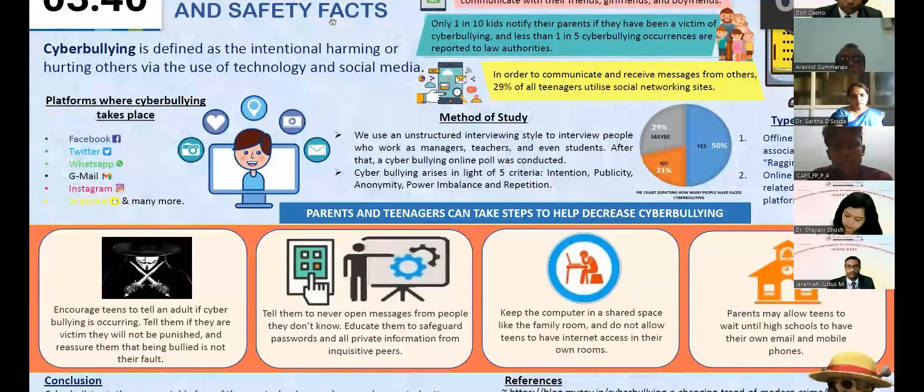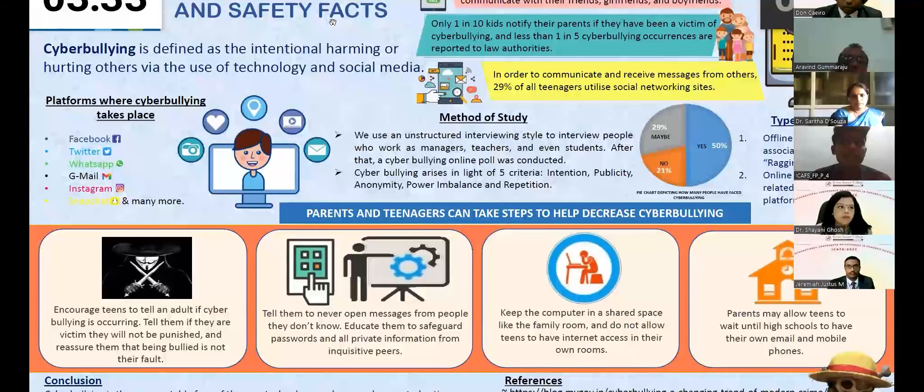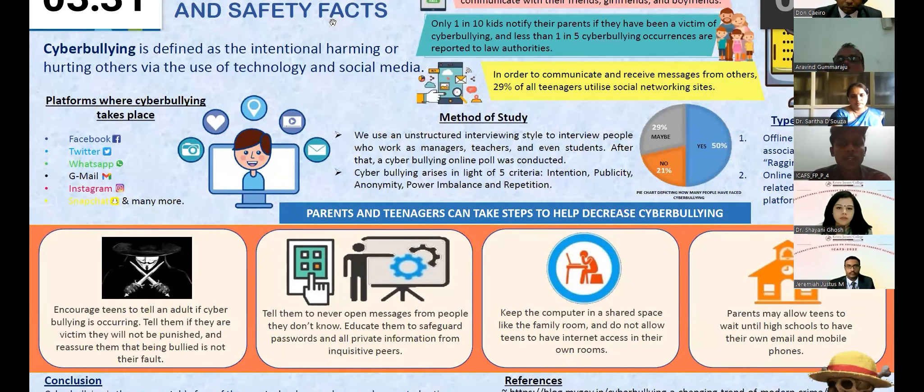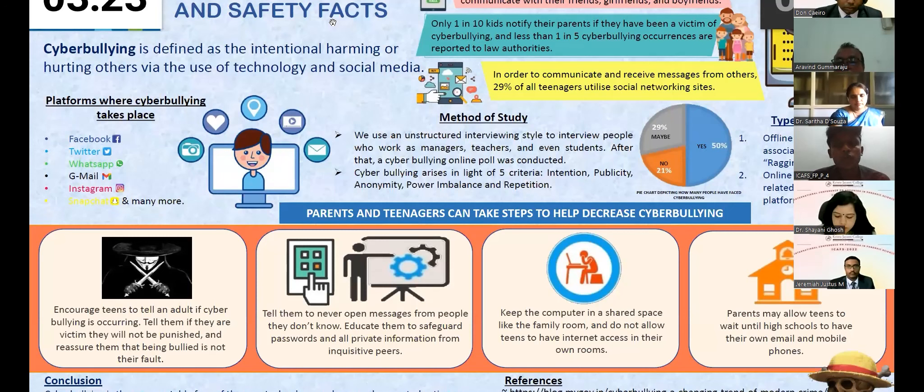Coming to the types, there are two types of bullying. One is offline bullying, which is related to the term ragging. For example, in institutions, schools or colleges, it can be a senior ragging a junior. The next form is online bullying, which is associated with bullying on the social media platforms. Social media platforms can include Facebook, Twitter, WhatsApp, Gmail, etc. An example of that can be someone blackmailing, revealing their private information, etc.